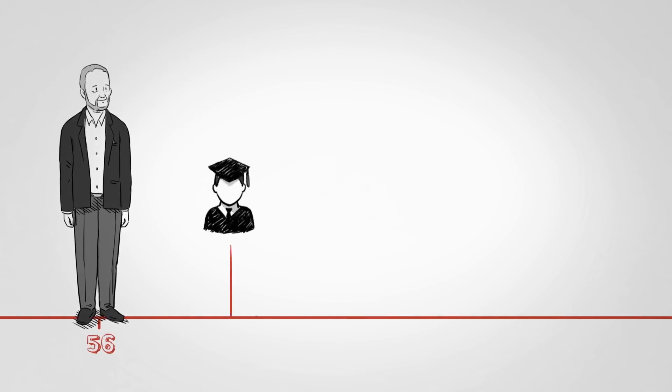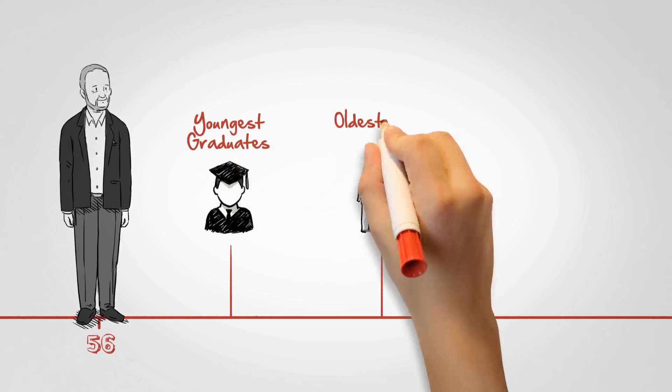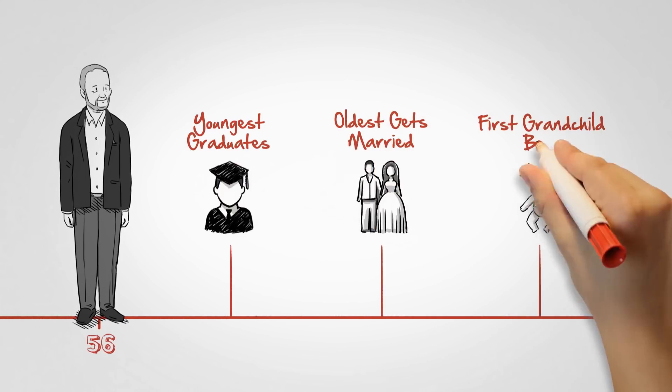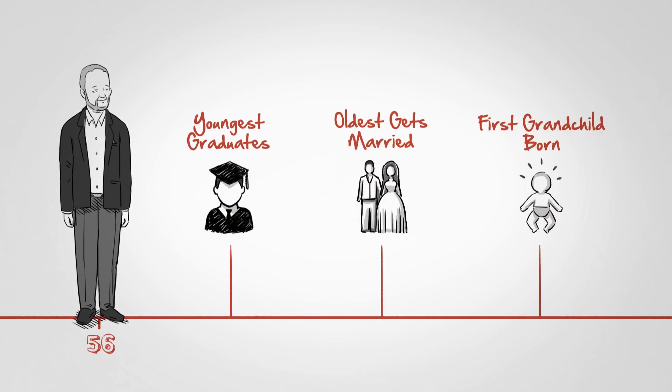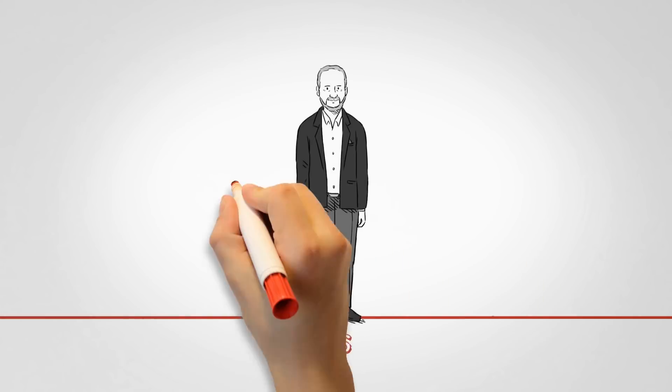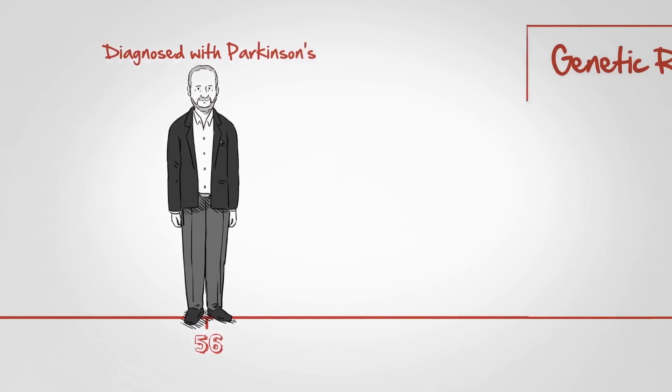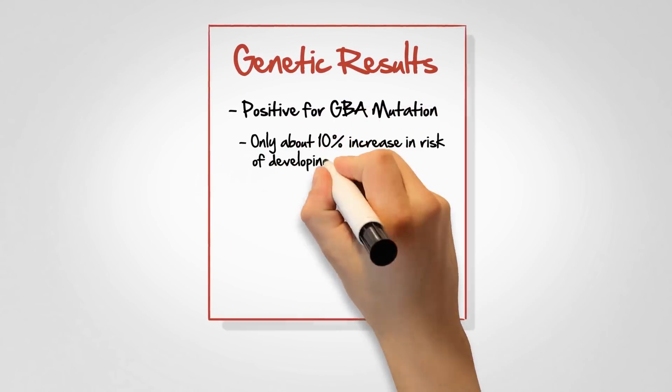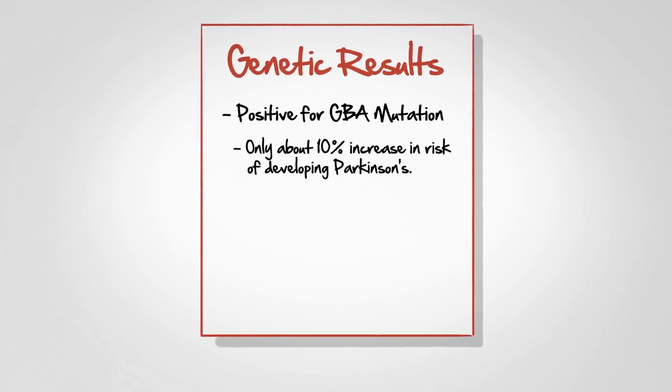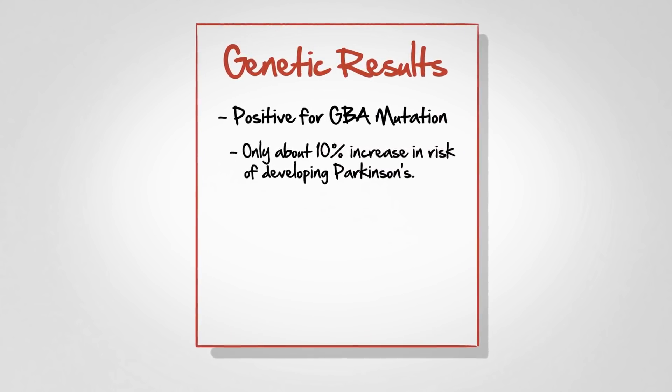When you're living with a genetic mutation and a disease, you think a lot about your children and their future. Our kids range in age from 16 to 20. Now, having the GBA mutation, or any other Parkinson's risk factor, does not guarantee getting Parkinson's. It increases the risk, but it's still only about 10 percent.